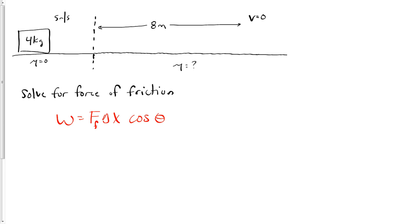Actually, we'll take a step backwards and say 50 joules equals the force of friction, which we're solving for, times the distance over which that force acts, 8 m, times the cosine of θ. θ is the angle between the force of friction, or the force which is doing the work, and the displacement.